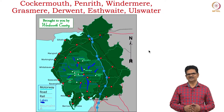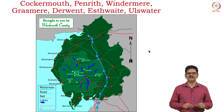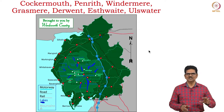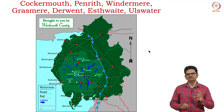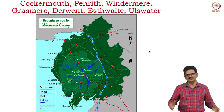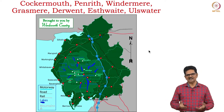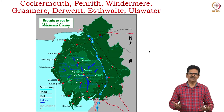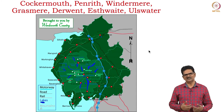This is the map of the Lake District. Key locations include Cockermouth, Penrith, Windermere, Grasmere, Derwent, Esthwaite, and Ullswater. The lakes are indicated in blue. Many lakes are there, and Wordsworth and his friends were living here for some time, moving around, walking in nature, breathing in nature, living with nature, and drawing inspiration from nature to write poetry about themselves and nature.